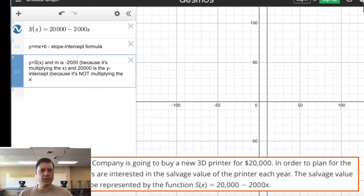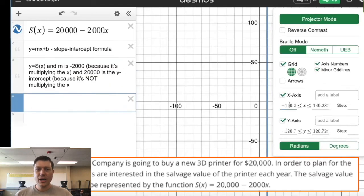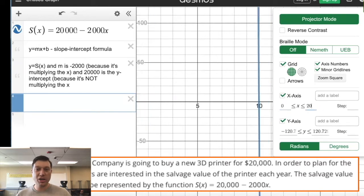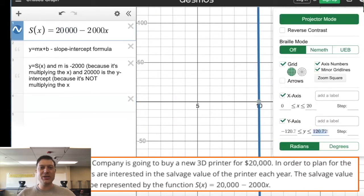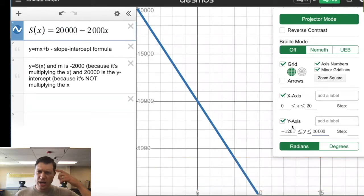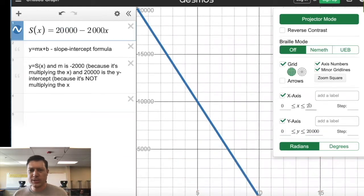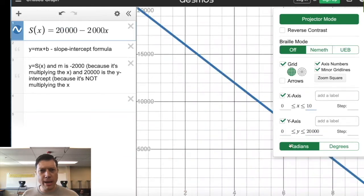But if you notice, this function, s of x, looks a lot like y equals mx plus b. And I'm counting on your knowledge from middle school or last year or previous classes to actually be like, oh yeah, spark that memory, y equals mx plus b. That's the slope-intercept formula.